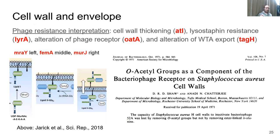As far as cell wall and envelope biosynthesis, it's been known since the early 1970s that O-acetylmorphication of muramic acid in the S. aureus cell wall is necessary for phage binding, and that came up as significant. Multiple other genes involved in cell wall biosynthesis also came up as significant, as well as part of the ABC transporter that pumps wall teichoic acid out of the cell, the major tollicin involved in cell wall thickening, and YRA, which is involved in lysostaphin resistance.